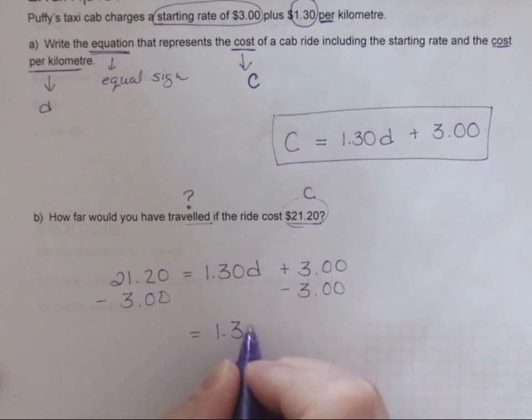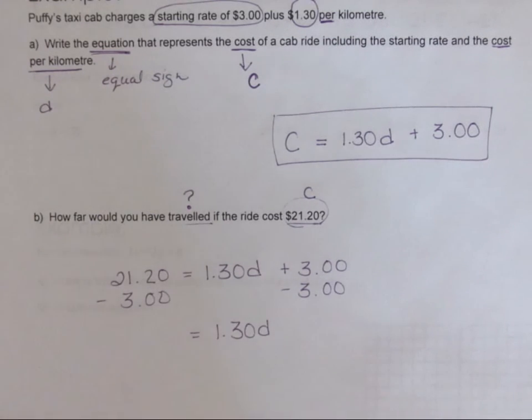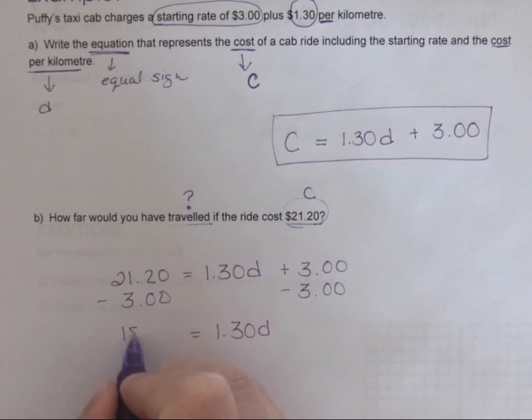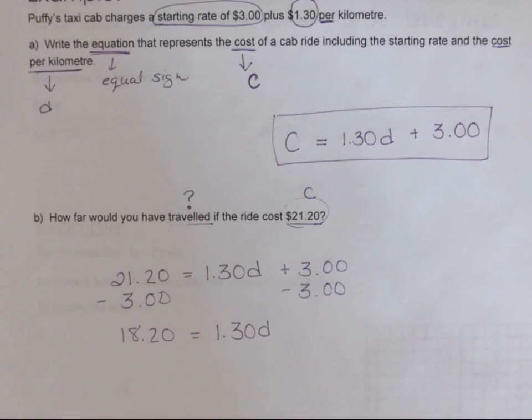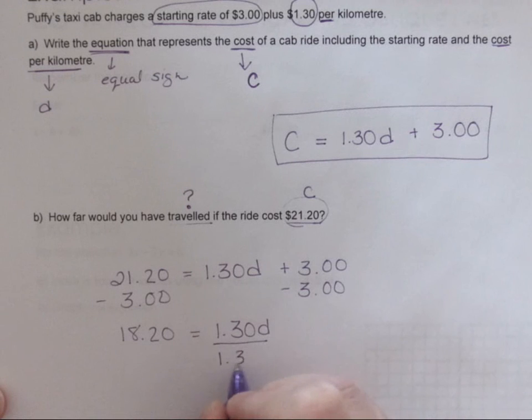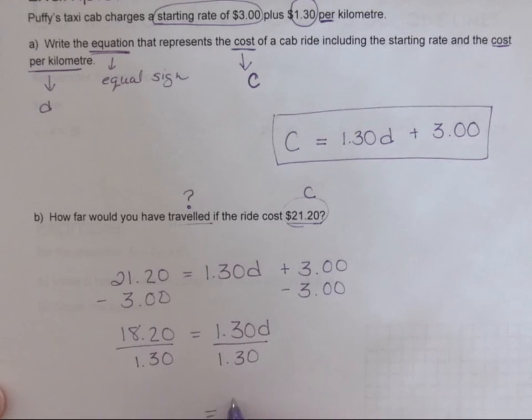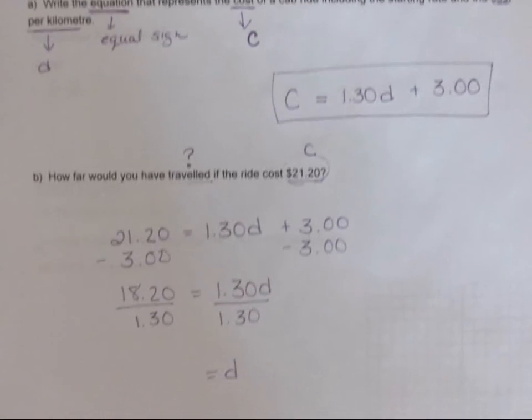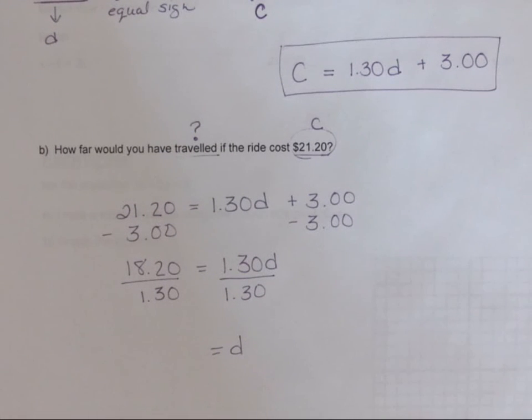We're left with 130d over here, and this is going to be eighteen dollars and twenty cents. I want d by itself so I'm going to divide by a dollar thirty. I'm going to divide this side by a dollar thirty. So d is equal to fourteen.